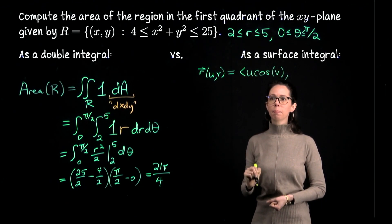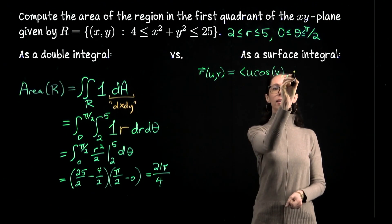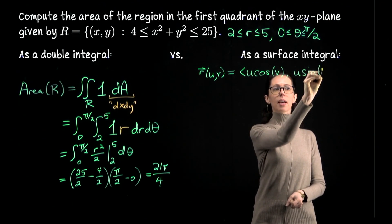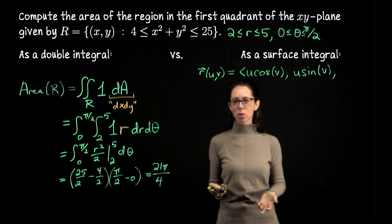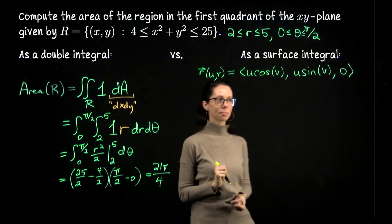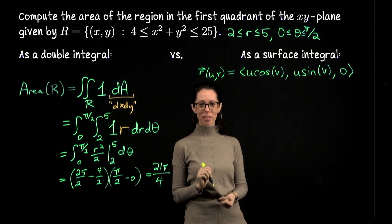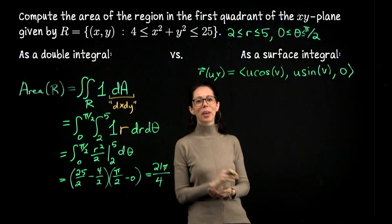That means that my parametric description is going to be - well, the radius varies from 2 to 5, so that's one parameter, and the angle varies, so that's my other parameter. Therefore my x-coordinate is going to be u cos v, my y-coordinate is u sin v, but then my z-coordinate is just going to be 0 because we're actually flat in the xy-plane. So that's a parametric description for this region in R², or in R² now situated in R³.